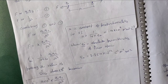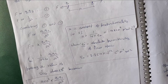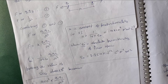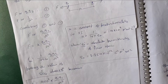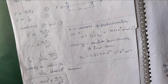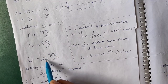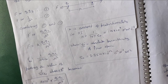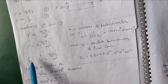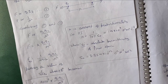The force between the two charges also depends on the medium in which the two charges are placed. Permittivity is the characteristic property of a medium which affects the magnitude of the force between the two charges. Greater the permittivity of a medium, lesser will be the force — the force is inversely proportional to the permittivity.